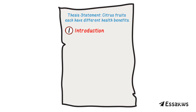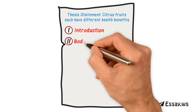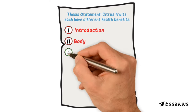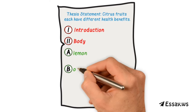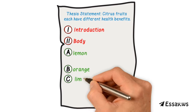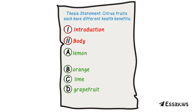Label your body and conclusion with Roman numerals. Step 2: Think of the major points that you want to make in your paper. If possible, you want to build a paragraph around each major point. Label each subpoint with capital letters.